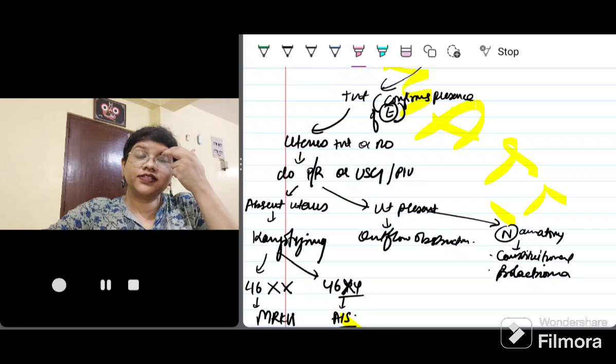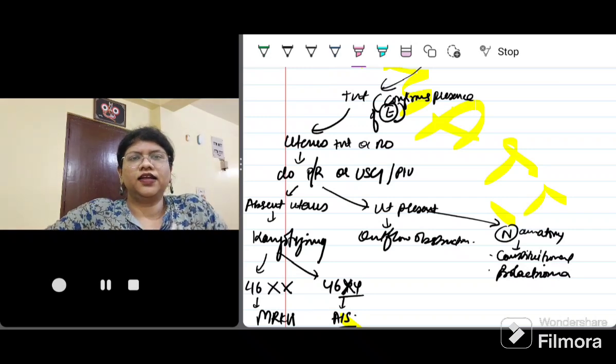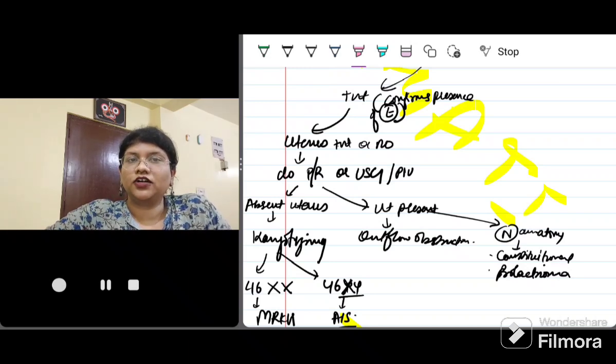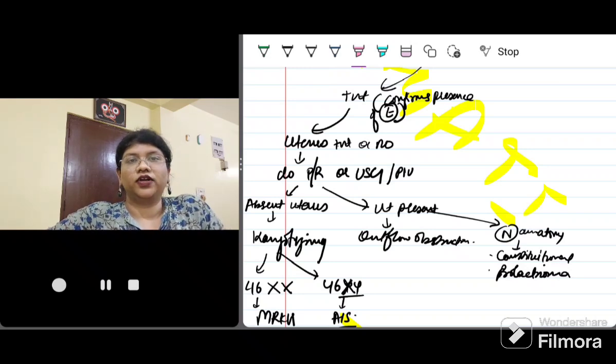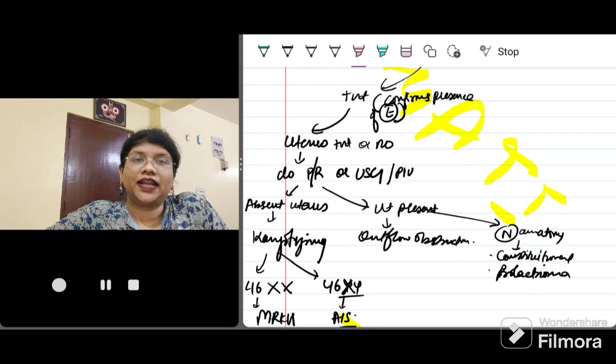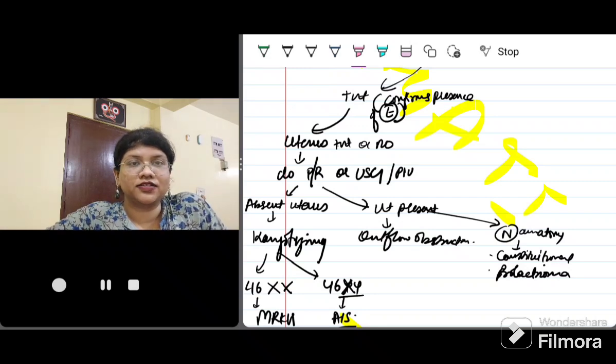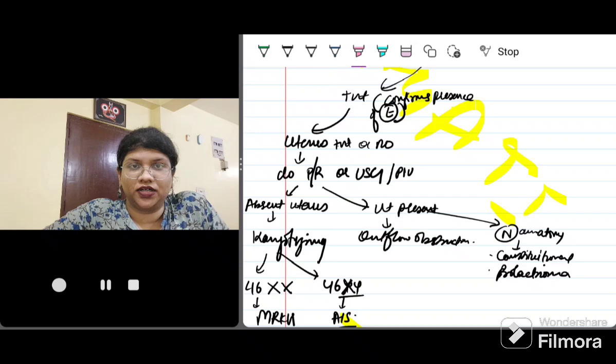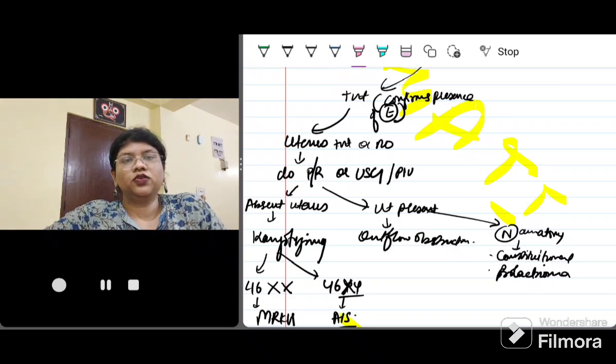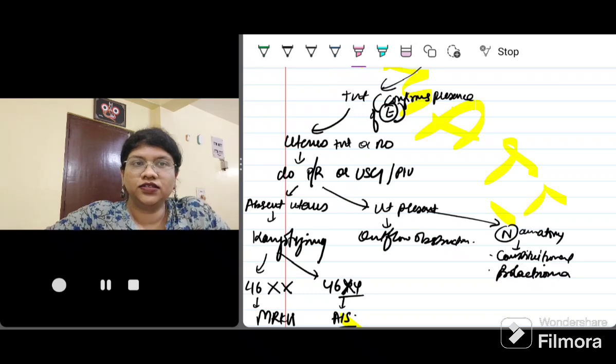If uterus is present, that means estrogen is there, uterus is present, that means there might be some outflow tract obstruction. Do a local examination and see for any imperforate hymen or transverse vaginal septum. If anatomically the outflow tract is normal, then it may be a constitutionally delayed puberty or delayed menarche, or it can be due to some CNS problem like prolactinoma.